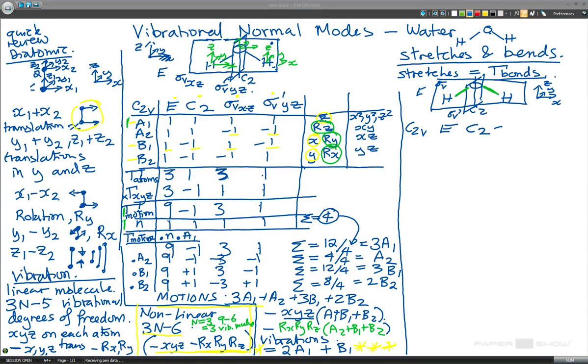E, C2, sigma V, X, Z, and sigma V, we'll call it primed, which is in Y, Z. And so the representation of the bonds. So again, we're asking the question, how many stay in the same place when we do the operation? And I suggest if you're playing along, then that you pause the video and have a go at this.